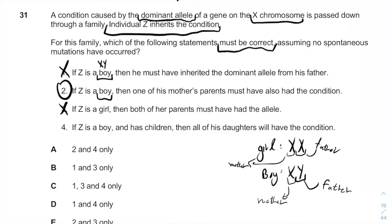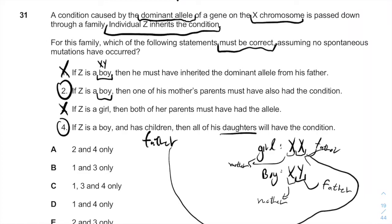If Z is a boy and has children, then all of his daughters will have the condition — which is correct, because the father will always give the X chromosome to his daughters, and because it's a dominant allele, all of his daughters will show the condition since one allele is enough to express the disease. Therefore two and four are correct, and our answer is A. Thanks for watching.